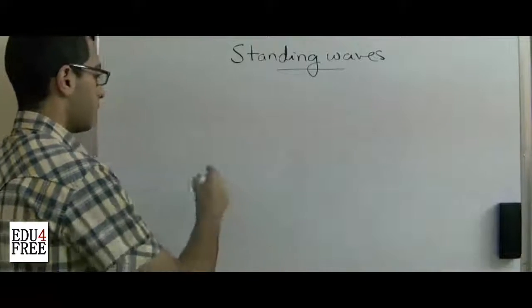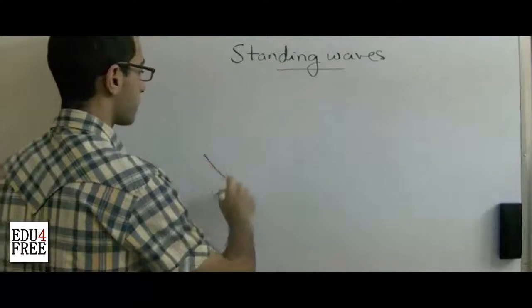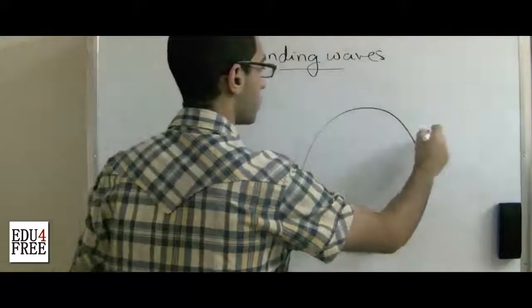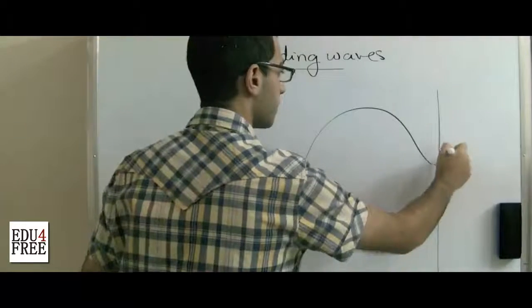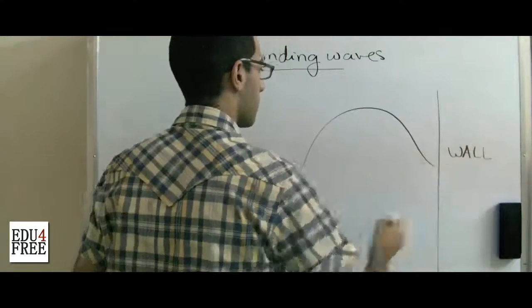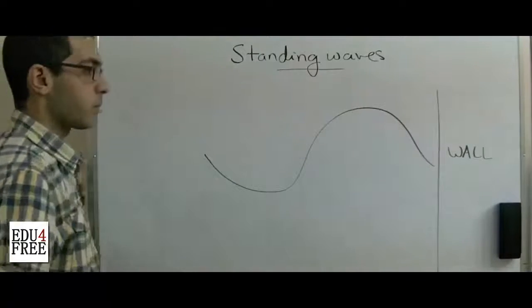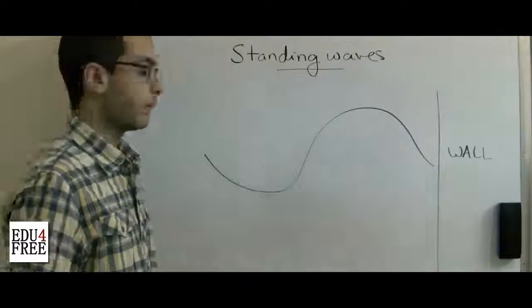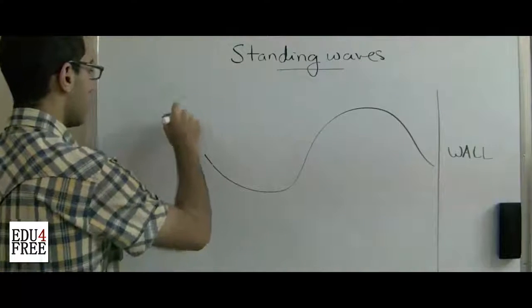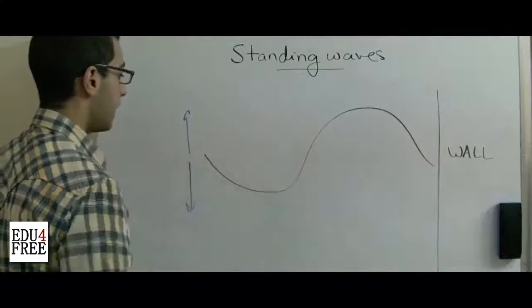So if we have a rope attached to a wall, and there is some kind of simple harmonic motion in this rope, so that the rope goes continuously up and down.